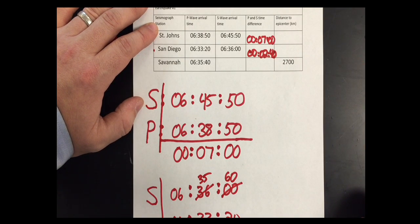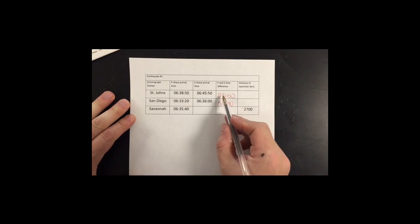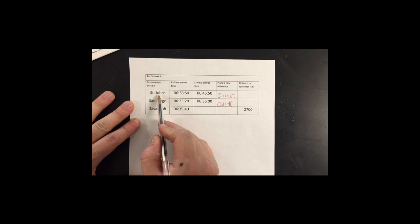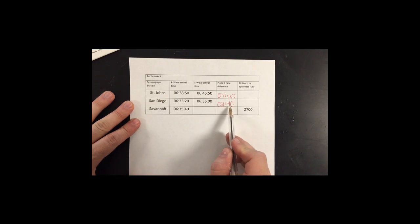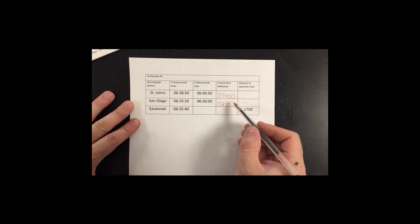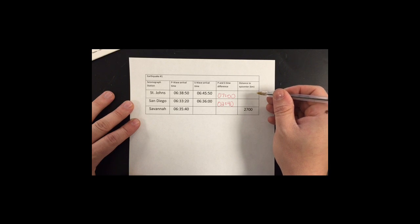That's all for step 1. Now in step 2, we have our P-S time differences: 7 minutes for St. John's and 2 minutes and 40 seconds for San Diego. We need to take those P-S time differences and convert them to the distance to the epicenter using the earthquake slide. Let's do St. John's first, where the P-S time difference is 7 minutes.